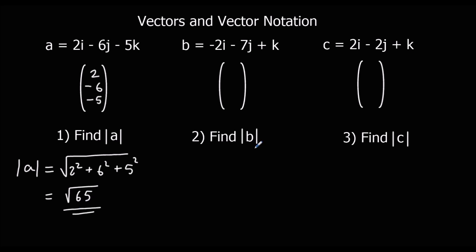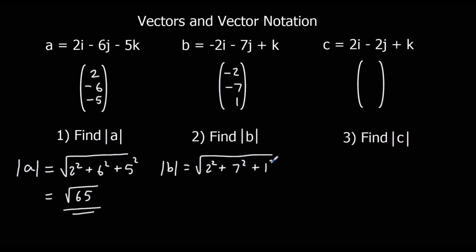For b, we have (minus 2, minus 7, 1), and mod b is the square root of 2 squared plus 7 squared plus 1 squared. So 49 plus 1 is 50, plus 4 is 54. Or we could write 3 root 6 if we simplified it.